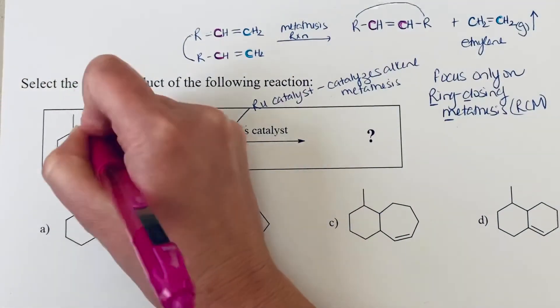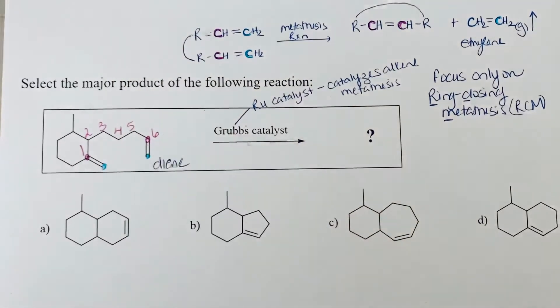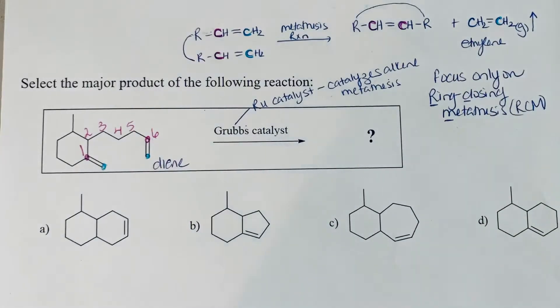So you will count one, two, three, four, five, six. And the other two carbon atoms are going to form that ethylene gas as a byproduct.